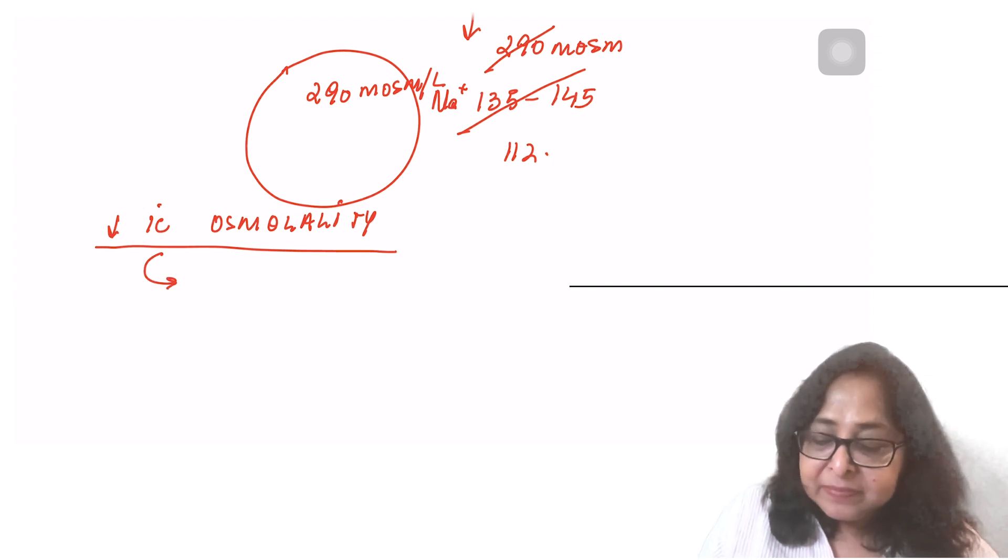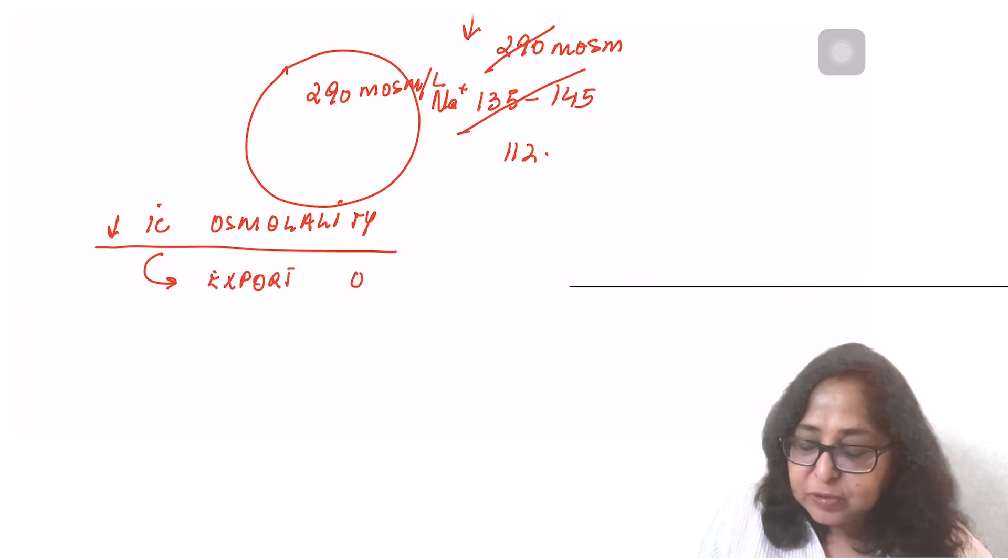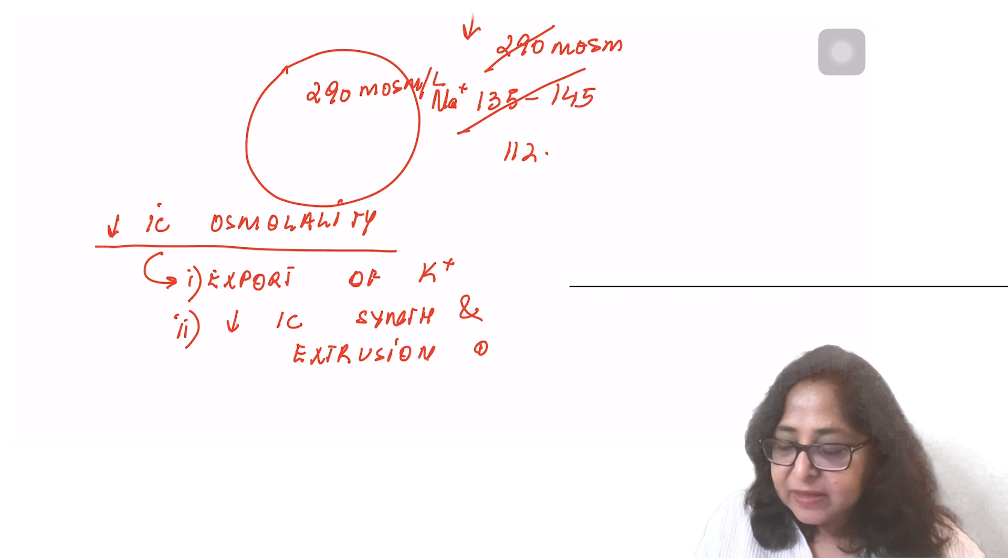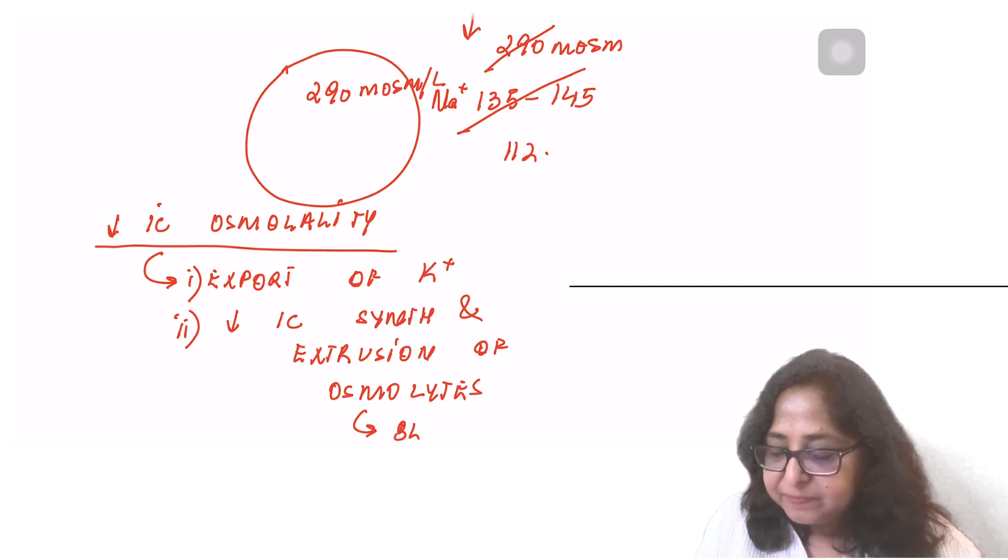Why do we need to do this? This is to prevent a shift of water. Because water always goes from a dilute to a concentrated solution. If the outside osmolality is lower, it is a dilute solution, water will start entering the cells. To prevent that, the brain cells undergo osmotic adaptation. There is a decrease in intracellular osmolality. How does that happen? Number one, export of potassium. Potassium moves out of the cells. And number two, there is a decreased intracellular synthesis and extrusion of osmolites. Which are the osmolites? These are osmotically active particles such as betaine, inositol and glutamine.